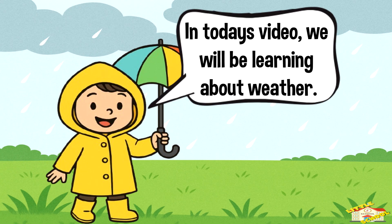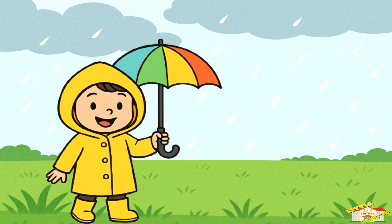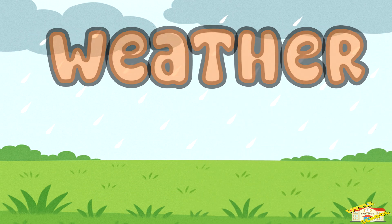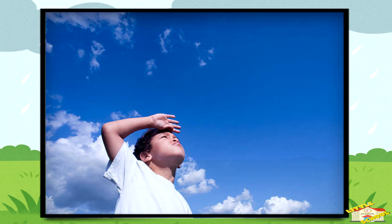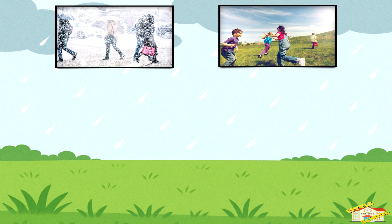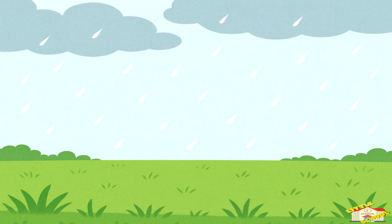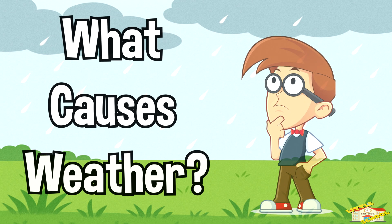Hey kids, in today's video we'll be learning about weather. Are you ready? Let's begin. Weather is what the air and sky are like on any given day — whether it's hot or cold, sunny or rainy, windy or calm. It happens in the troposphere, the lowest layer of Earth's atmosphere.